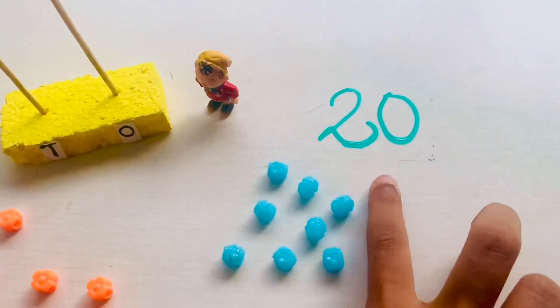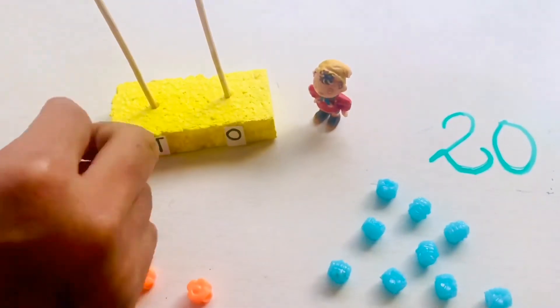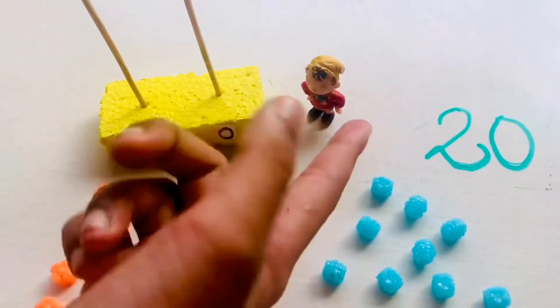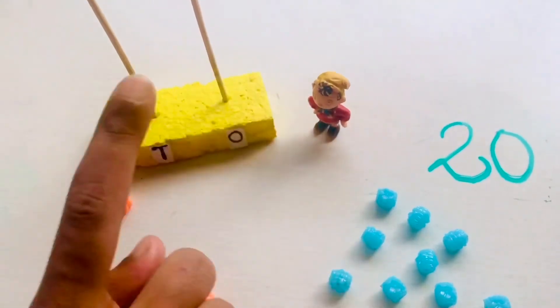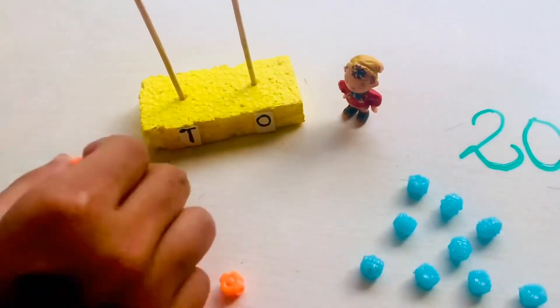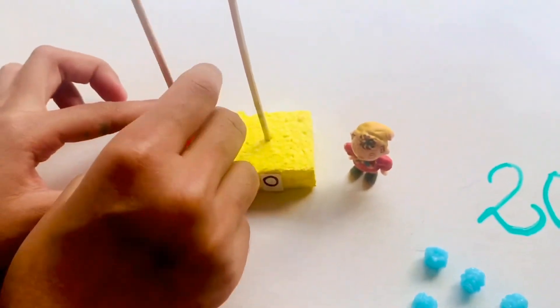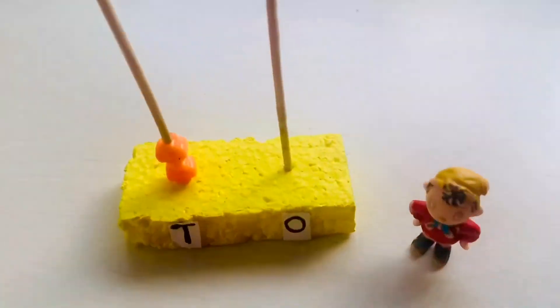The next number we are going to make is 20. We have 0 units so we don't place any units. Then we start placing the tens beads. 1, 2. That makes 20.